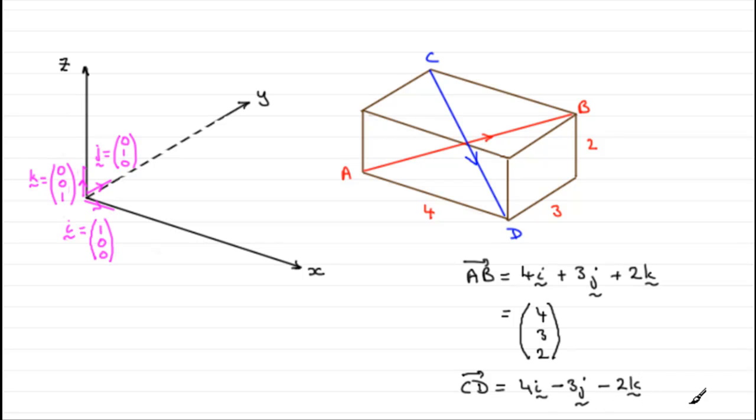So hopefully that's given you an idea then, how we can write vectors, the different types of notation. It can be as a column vector, or in terms of the unit base vectors i and j, and if it's three dimensions, k.